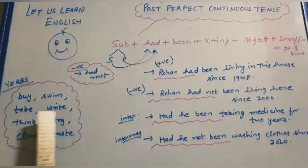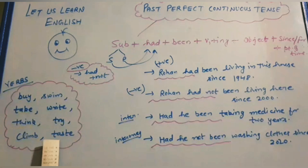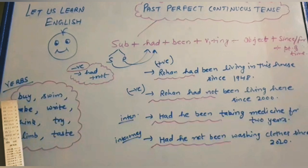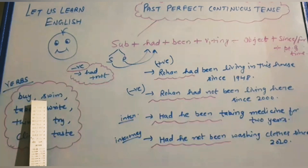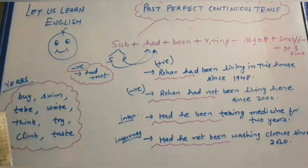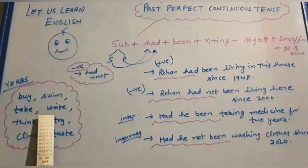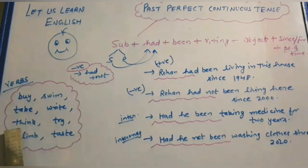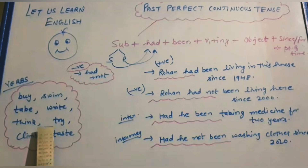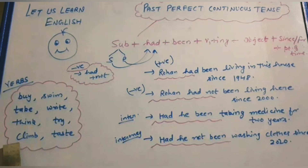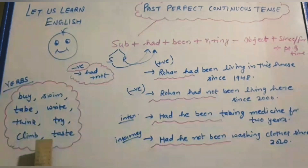We can make past perfect continuous tense with more verbs: buy, swim, take, write, think, try, climb, and taste. She had been buying clothes since 1940. She had been swimming since 1990. They had been taking tea since 1942. She had been writing stories for two years. They had been thinking over this matter for three years. They had been trying to solve this sum for two years. They had been climbing the trees since childhood. They had been tasting the food since 1919.